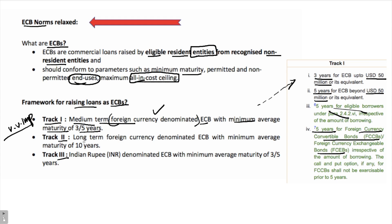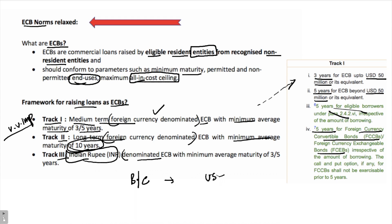Track 2 is for long-term borrowing in the form of foreign currency only, and the minimum average maturity is 10 years. In the case of Track 3, the difference is that the borrowing is denominated in Indian rupees and not in foreign currency. So if an Indian company wants to borrow from the USA under Track 3, it borrows in rupees, whereas under Track 1, it borrows in US dollars. The minimum average maturity for Track 3 is 3 to 5 years — 3 years for up to USD 50 million and 5 years for more than USD 50 million.